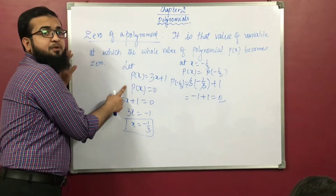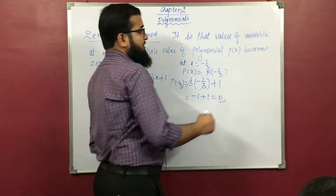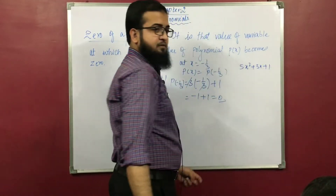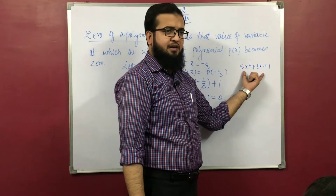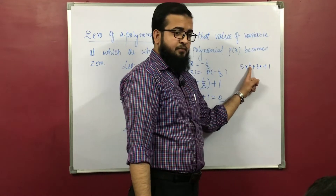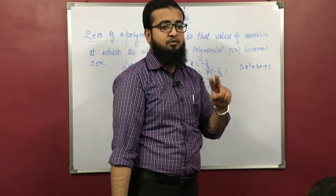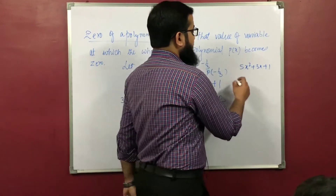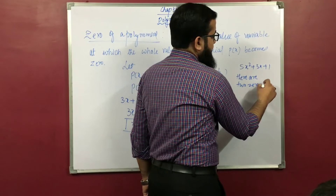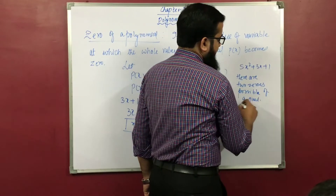If we are having a quadratic polynomial, it means we will be having two zeros. Suppose we are having a polynomial like 5x square plus 3x plus 1. The degree is 2 — it is the highest power of the variable — so it is a quadratic polynomial. There are two zeros possible of a quadratic polynomial.